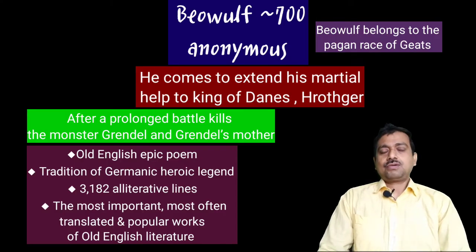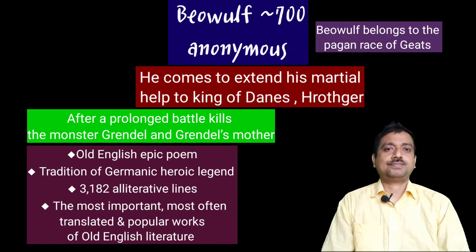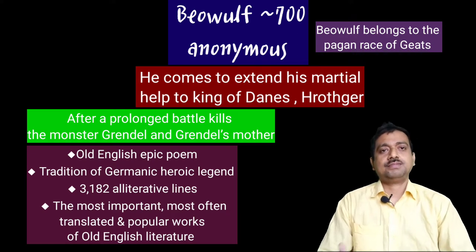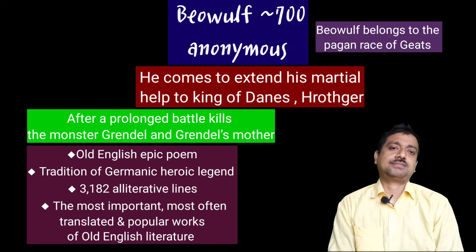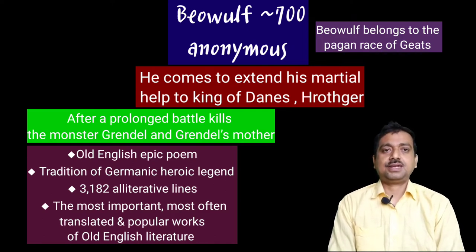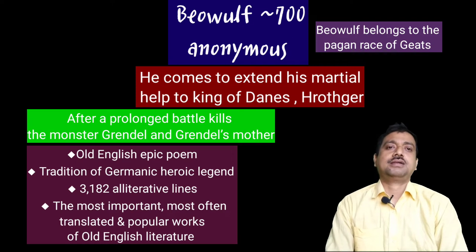Old English literature contains the beautiful poem Beowulf, written around 700 AD. The story of Beowulf belongs to a pagan origin. It tells of how Beowulf came to help the Danes and King Hrothgar. After a prolonged battle, he kills the monster Grendel and Grendel's mother, and his victory is celebrated. Whether Beowulf is a historical king is quite debatable, but he is a pagan tale into which Christian elements were interfused in a later part.